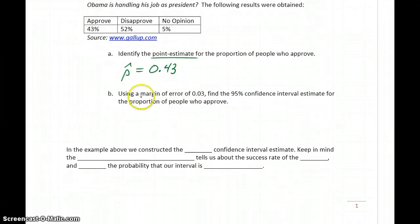Now let's assume we have a margin of error of 0.03, so 3%. We want to find the 95% confidence interval estimate for the proportion of people who approve. To get that, we'll take 0.43, which is that sample proportion, and we'll add and subtract 0.03.